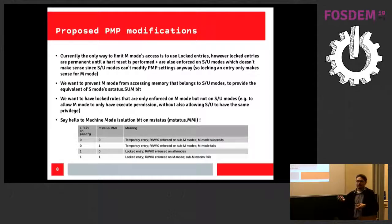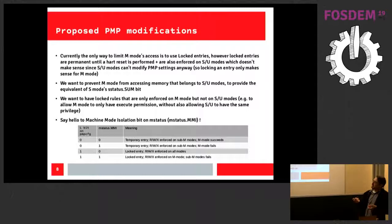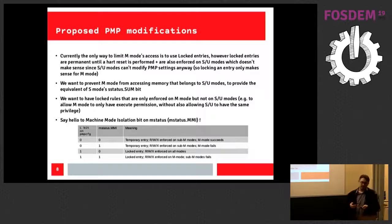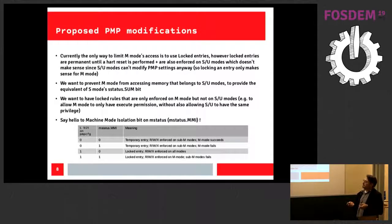We want to be backwards compatible, so when the L-bit is set, the rule is enforced on machine mode as well. But when the MMI bit is set, the rule is enforced on machine mode but not on other modes. This allows rules that don't deny access but allow it — for example, allowing machine mode to execute firmware code but not read or write it. When the L-bit is zero, the rule is not enforced on machine mode; when the MMI bit is set, machine mode access will fail.